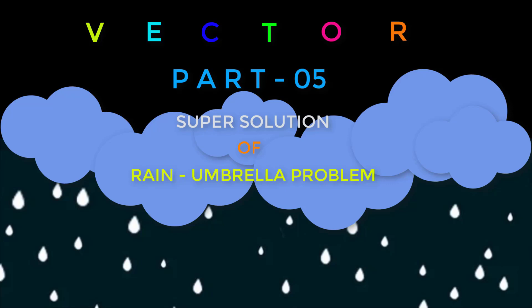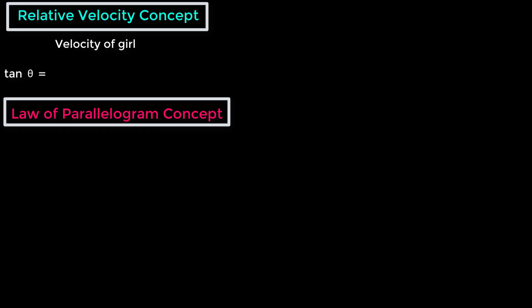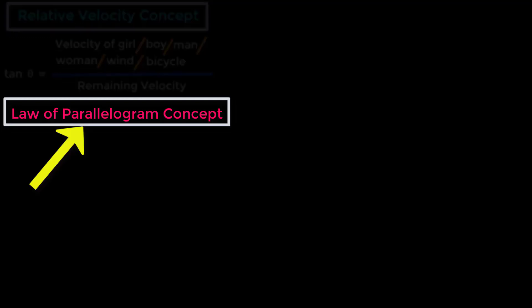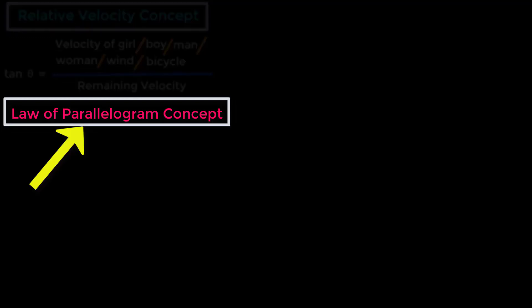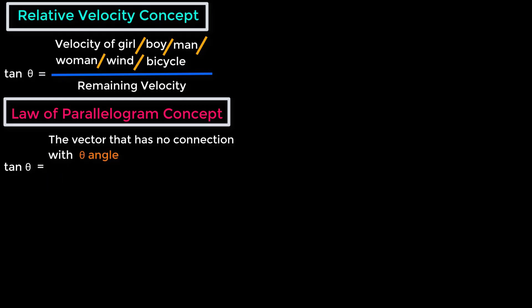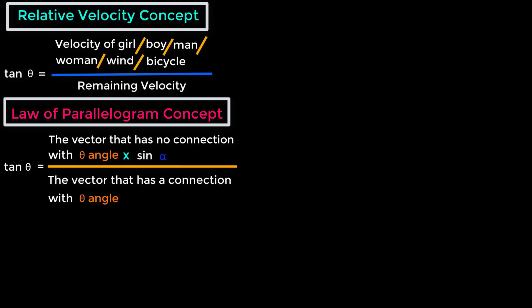We can solve these types of problems by using either the relative velocity concept or the law of parallelogram concept. For the relative velocity concept, the formula is: tan θ = velocity of girl (or boy, man, woman, wind, or bicycle) over the remaining velocity. For the law of parallelogram concept, the formula is: tan θ = (the vector with no connection to θ × sin α) over (the vector connected to θ + the vector with no connection to θ × cos α).